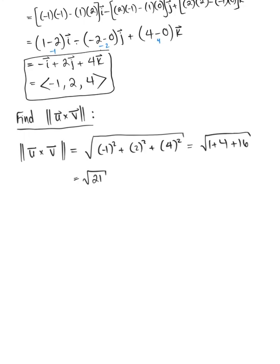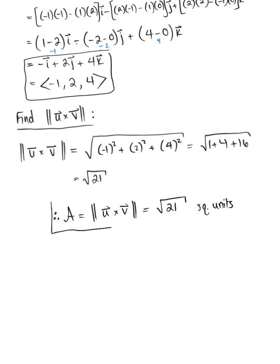We can't simplify this any further, so the area of the parallelogram, defined as the magnitude of the cross product of vectors u and v, is the square root of 21 square units. This is our final answer.